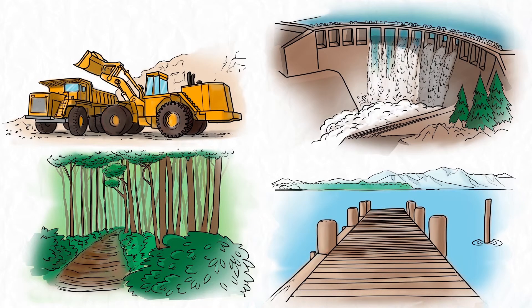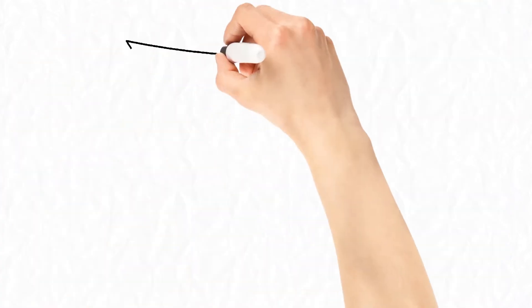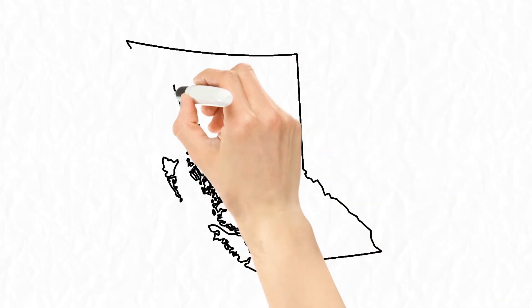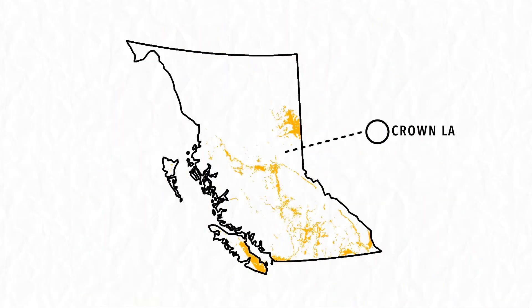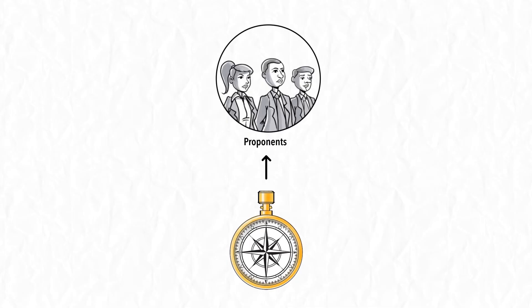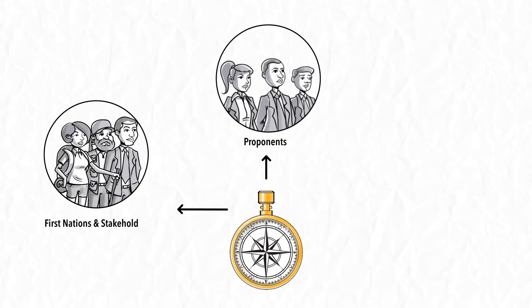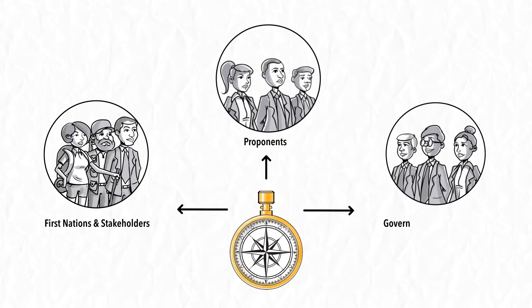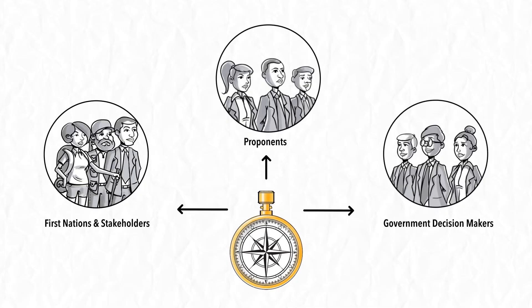The Environmental Mitigation Policy will usually be applied to projects proposed on Crown land, but the principles and process can also be applied to developments on private land. In addition to providing guidance to proponents, the policy and procedures can also guide stakeholders and government decision-makers who review development projects.